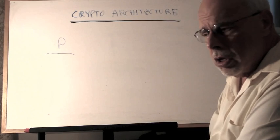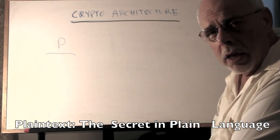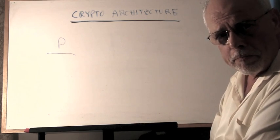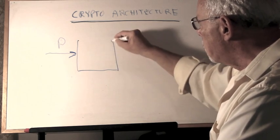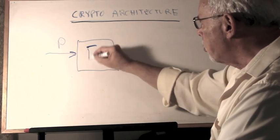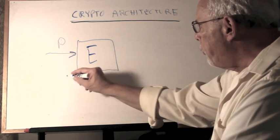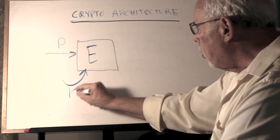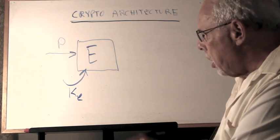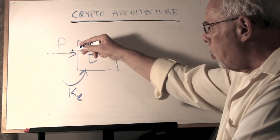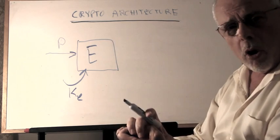The basic architecture talks about something called plaintext, which is the secret in plain language that everybody can understand. Whoever has possession of the plaintext reads the secret. The plaintext is fed into a box called the encryption box, and into this encryption box we feed something called an encryption key.